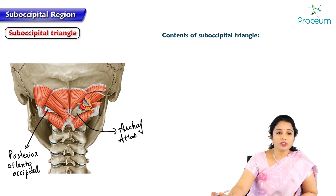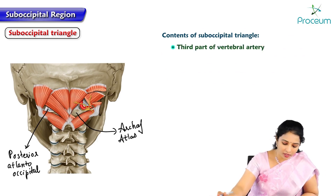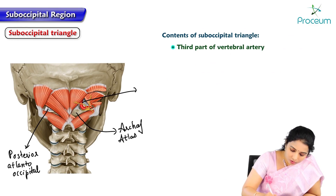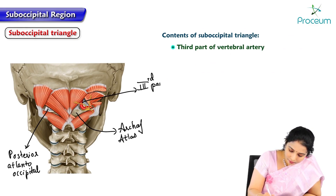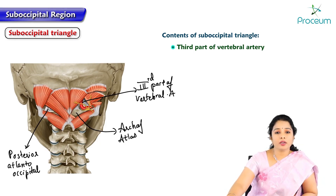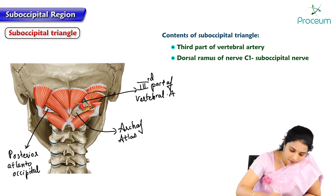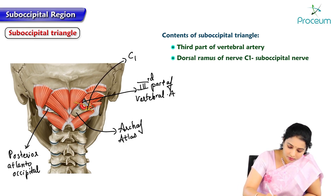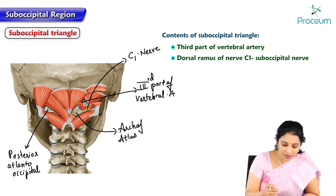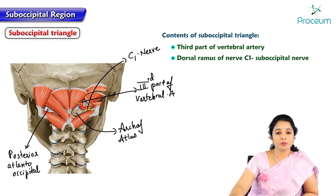The contents of the triangle include the third part of the vertebral artery — this artery which is looping here is the vertebral artery — and the dorsal ramus of C1 nerve, the suboccipital nerve, which supplies all these suboccipital muscles. We can see the suboccipital nerve ramifying here to innervate all these suboccipital muscles.